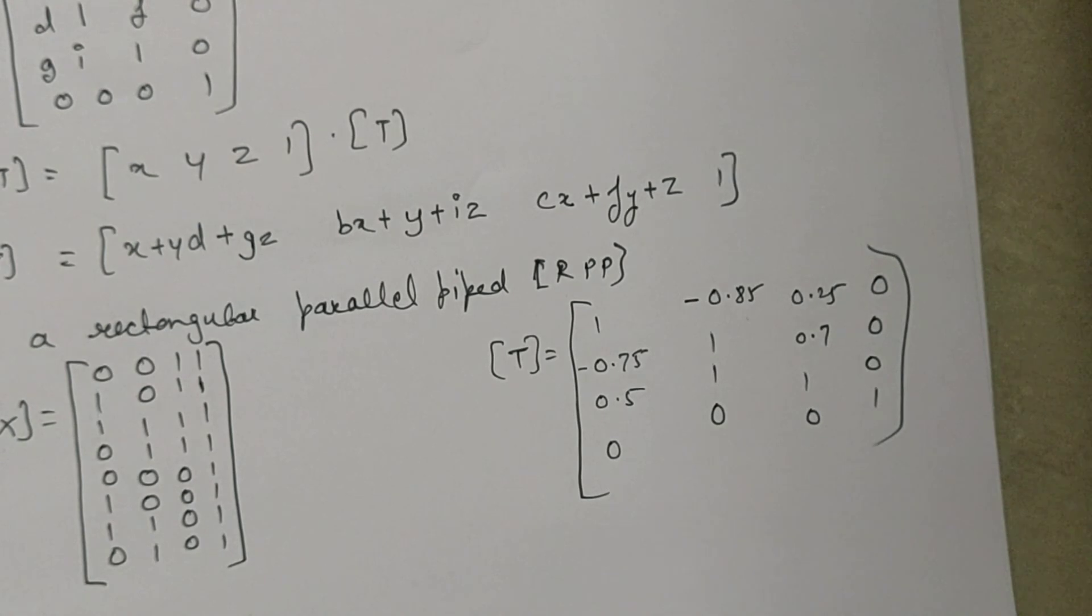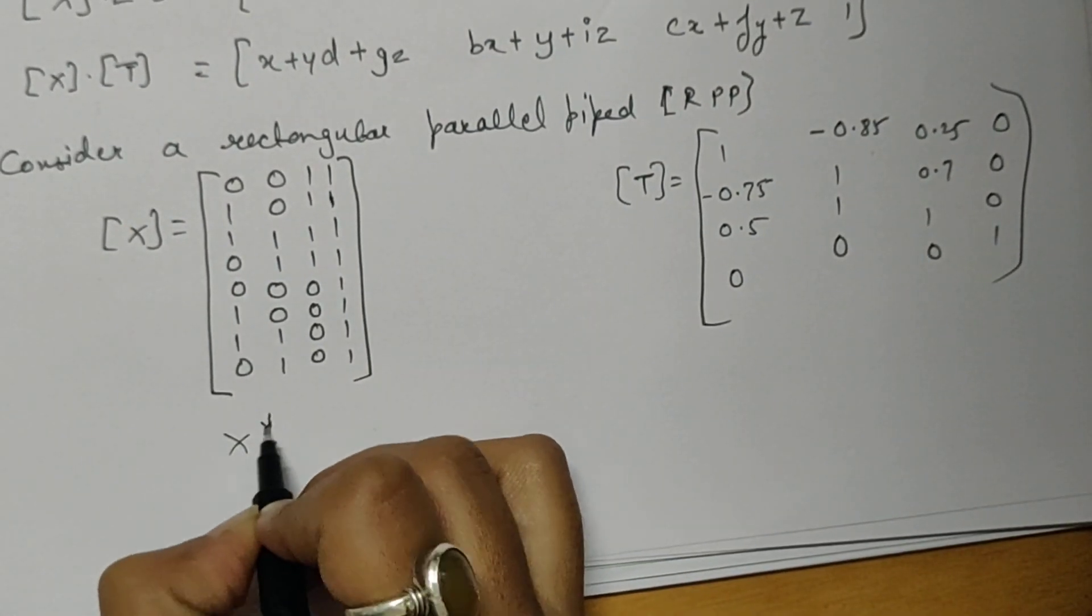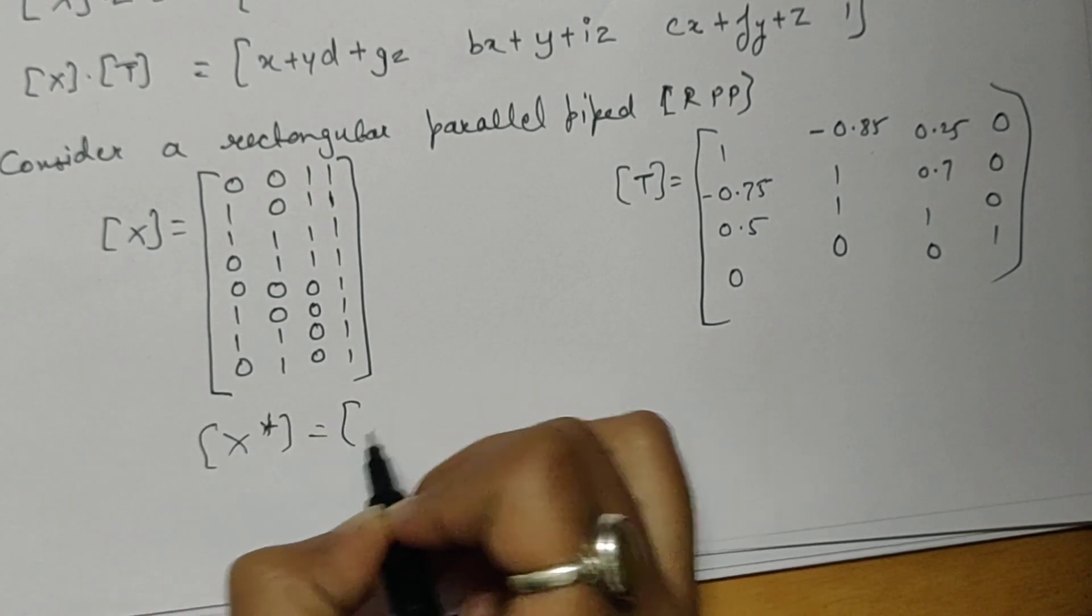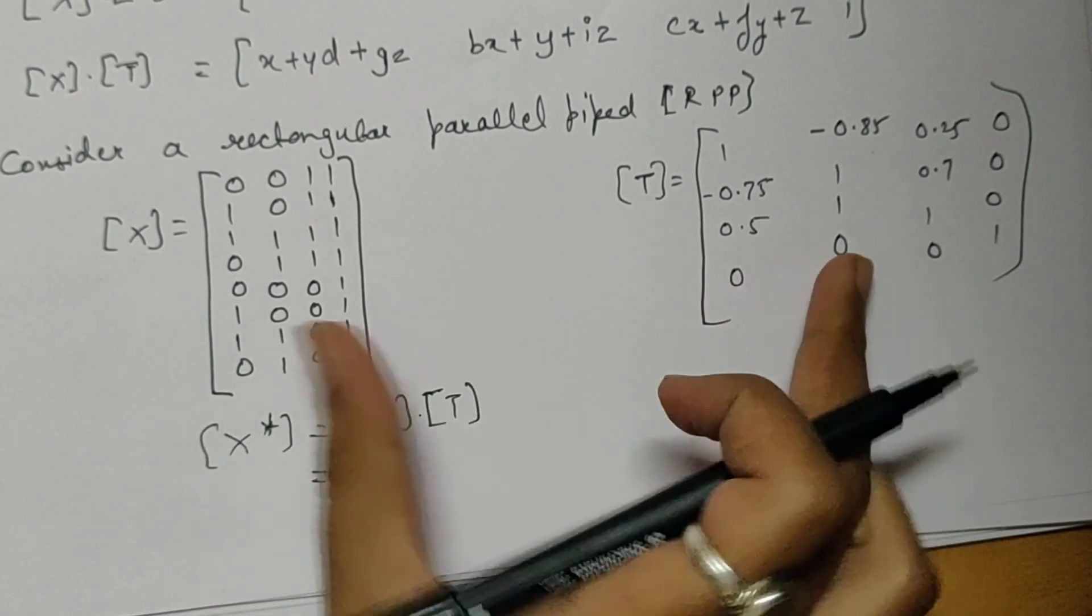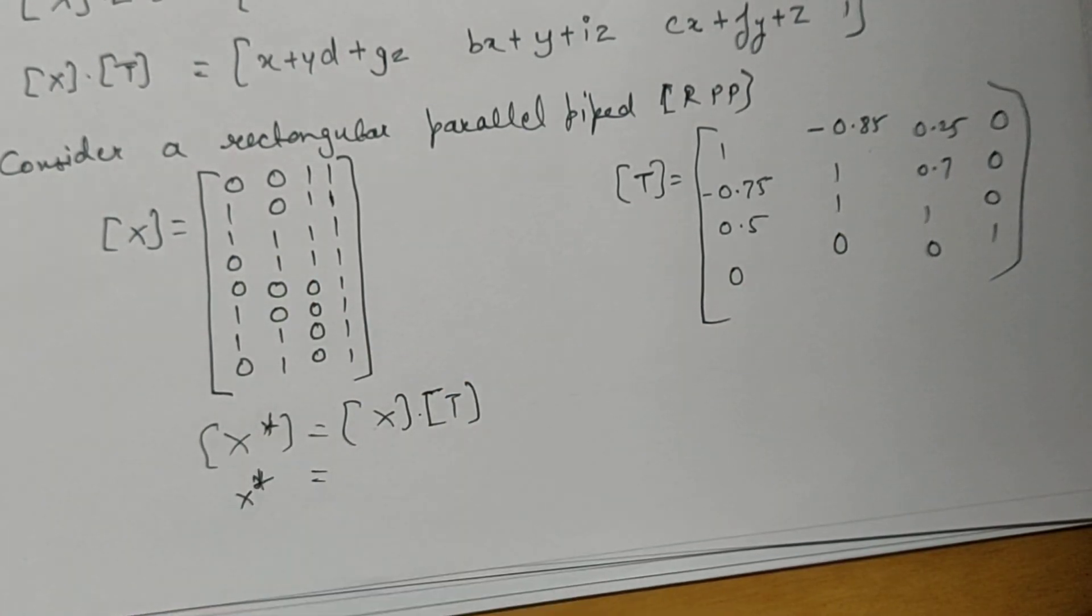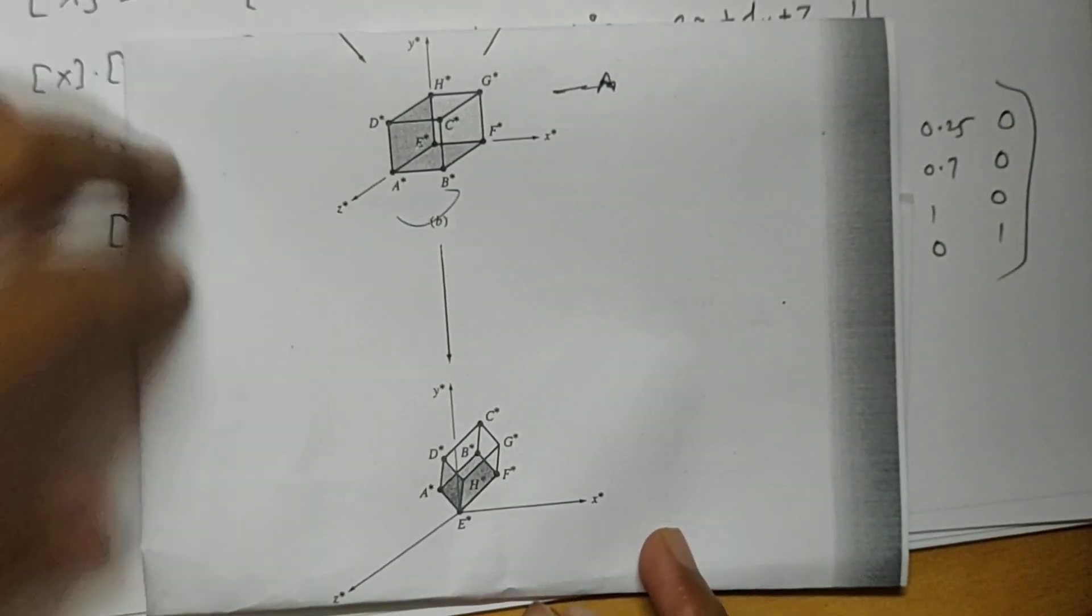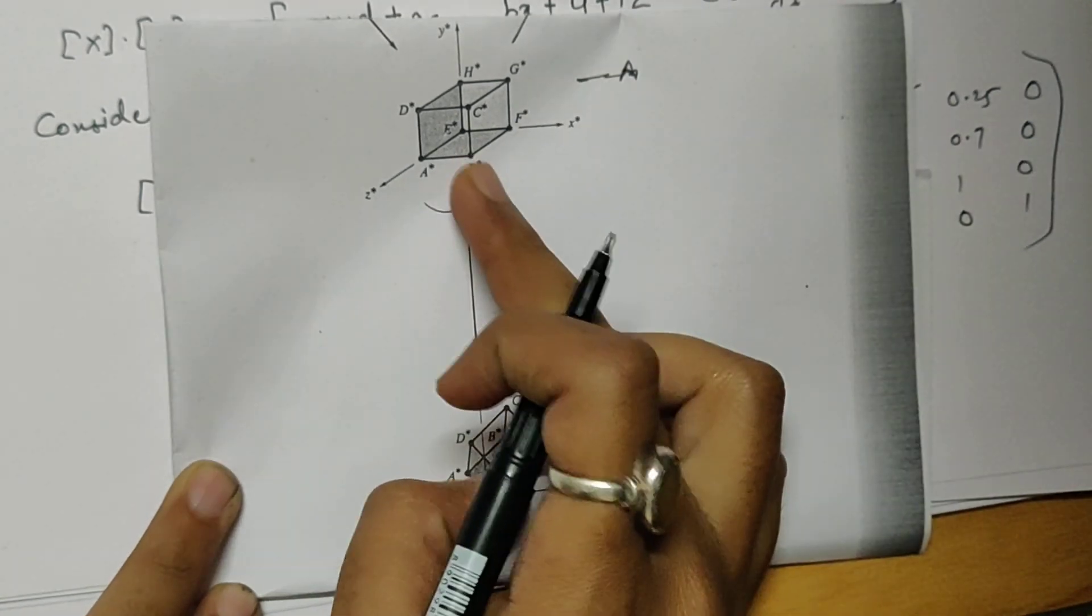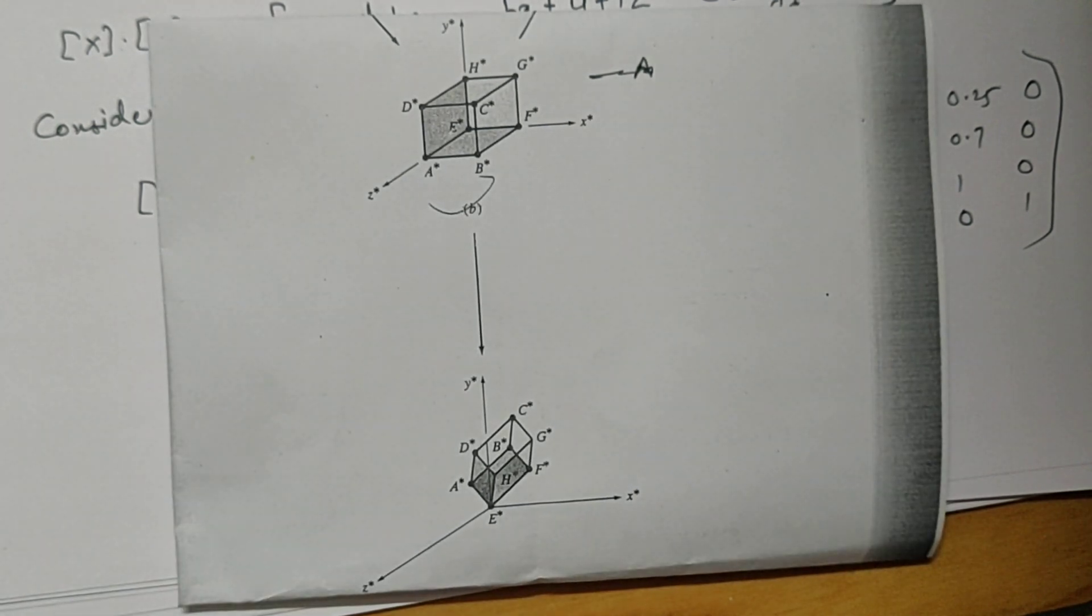To calculate the new point X star, we use the formula X times T. When multiplying these two matrices, we get X star. This gives us the output. See here - this is the original object and this is the new object after shearing. Thank you.